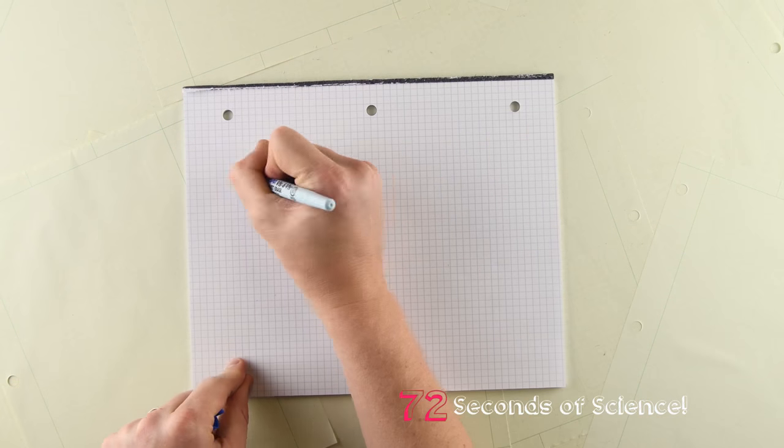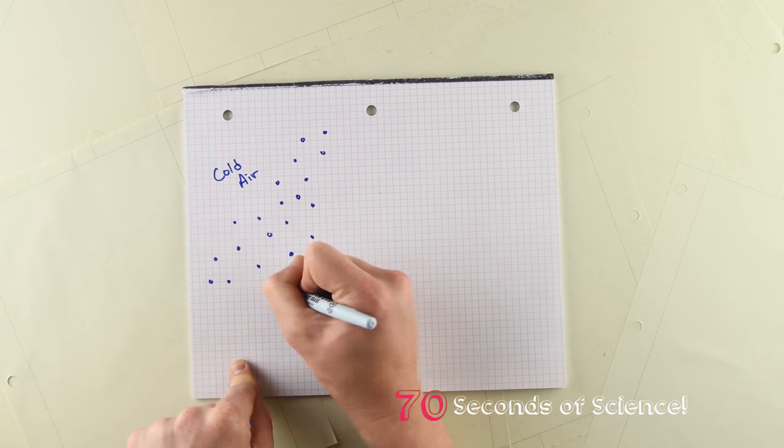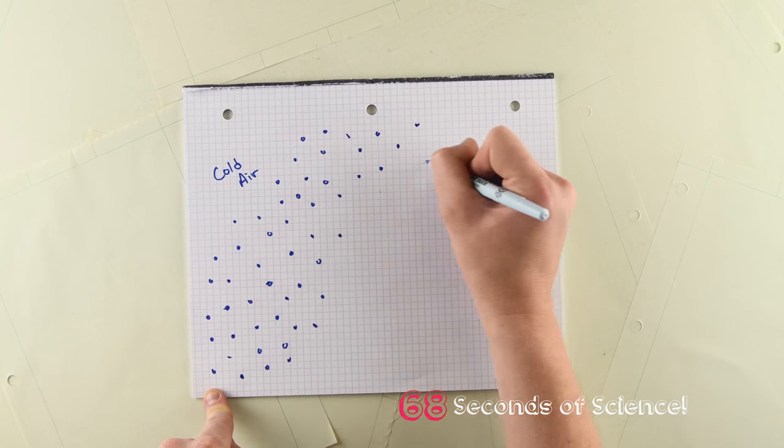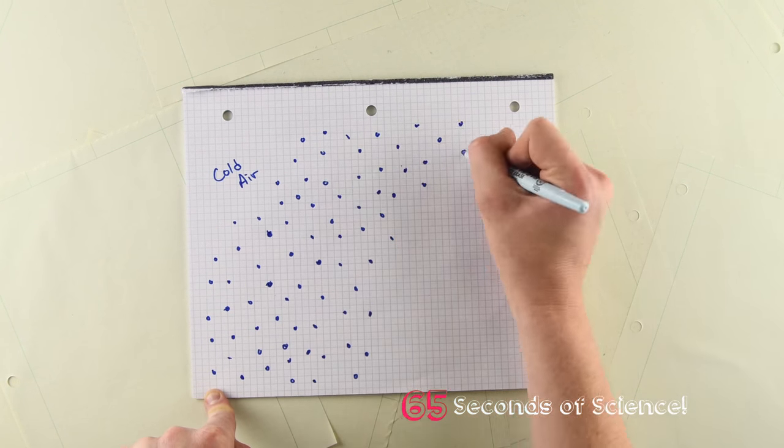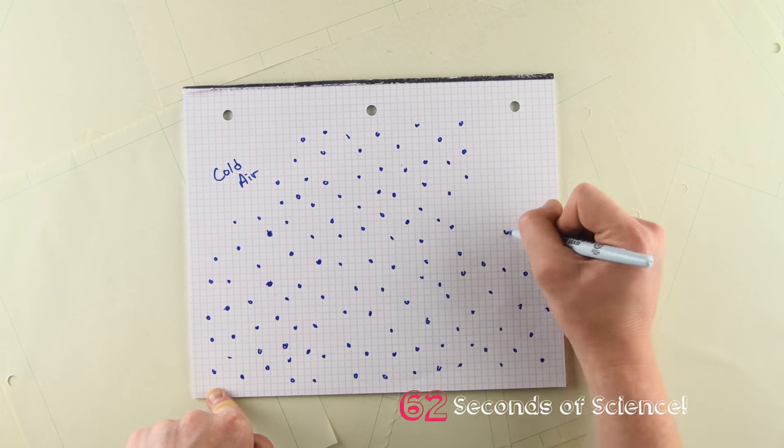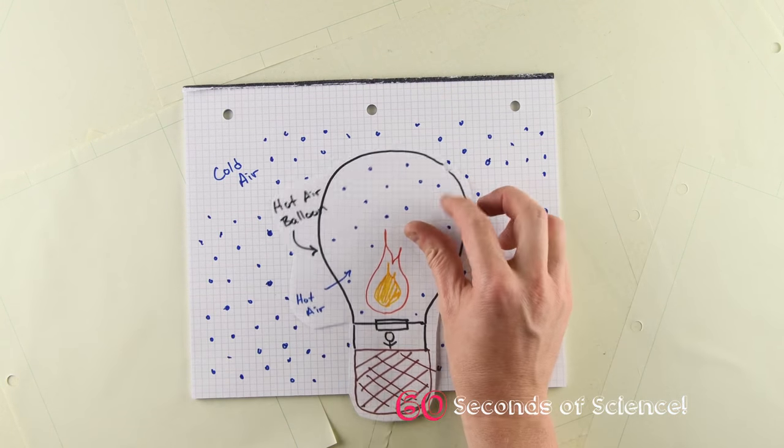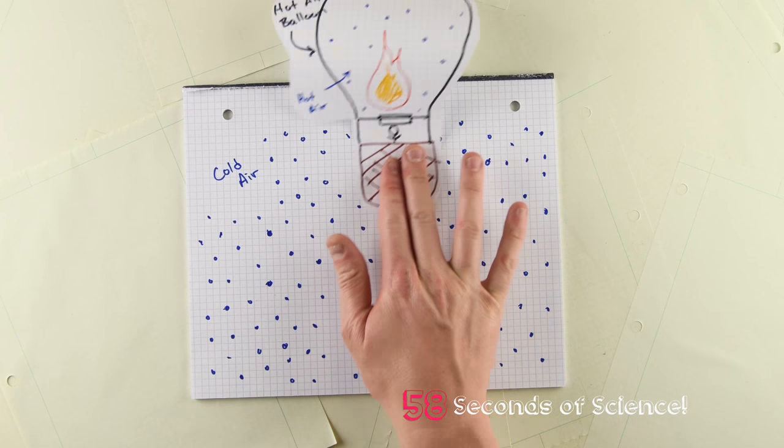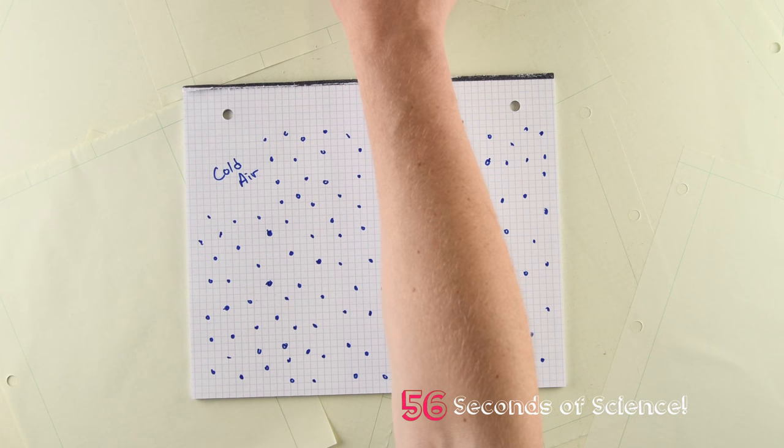Archimedes' Principle tells us that the buoyant force acting on an object is equal to the weight of the liquid or gas that it displaces. So if the density of the fluid around any material is greater than the density of that material itself, then the fluid being displaced will weigh more, and the material will float. This is why hot air balloons can fly.